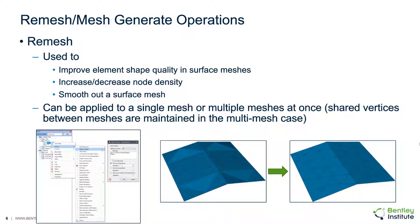The remeshing option in the software is used to improve element shape quality in surface meshes, increase or decrease node density, and smooth the outer surface mesh. There is a difference between a surface mesh that accurately represents a surface in 3D and a mesh that is acceptable for potential use as a finite element solution. The remeshing function is useful for converting a functional surface mesh to a mesh with well-formed elements that would be better suited for finite element analysis.